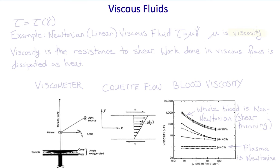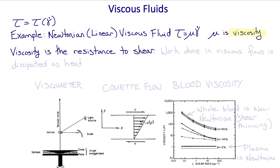A common constitutive model for fluids is the viscous fluid, in which the shear stress tau is a function of the shear rate, gamma dot. For example, in a Newtonian linear viscous fluid, the shear stress tau is proportional to the shear rate, and the constant of proportionality mu is called the viscosity. Viscosity is the resistance to shear, and work done in viscous flows is dissipated as heat.